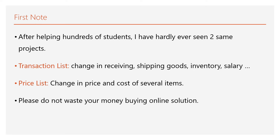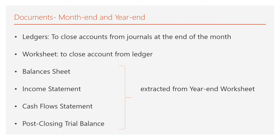You better do it yourself or find someone to actually do it for you from the very beginning. Please do not waste your money buying online solutions. If you're lucky, you're not going to get a good grade. And if you are very unlucky, the professor is going to wonder where you got all those numbers that don't follow your transaction list and price list — and you're risking an F on your transcript. Regarding documents for the month-end and year-end procedure, you need the ledger to close accounts from the journal at the end of the month, then a year-end worksheet to close accounts from the ledger, and then the balance sheet, income statement, cash flow statement, and post-closing trial balance — all usually extracted directly from the year-end worksheet.